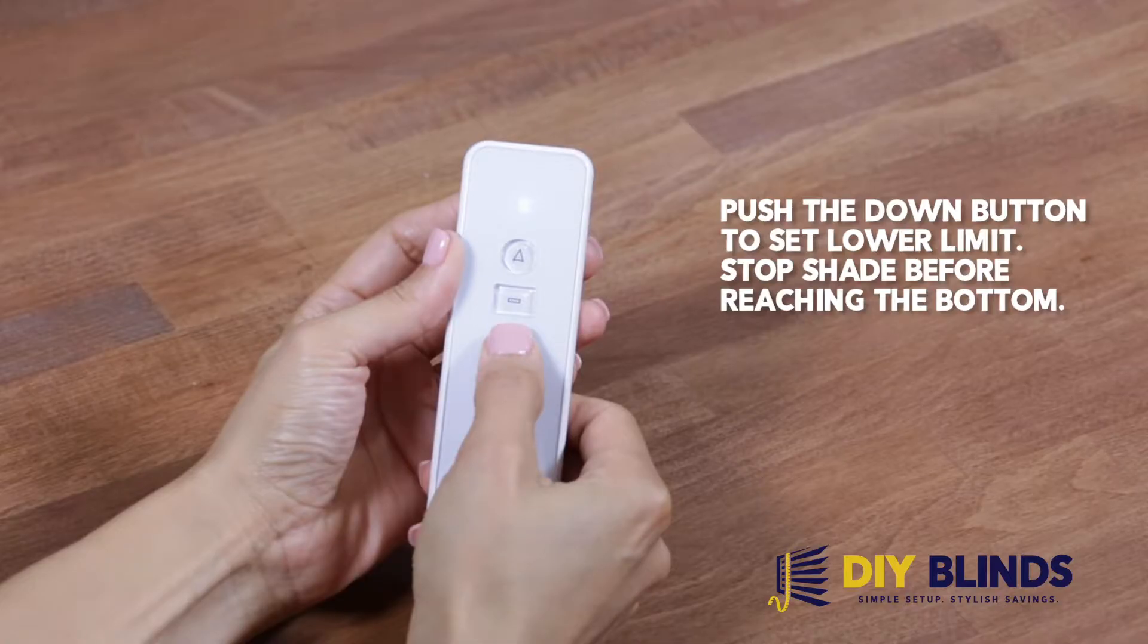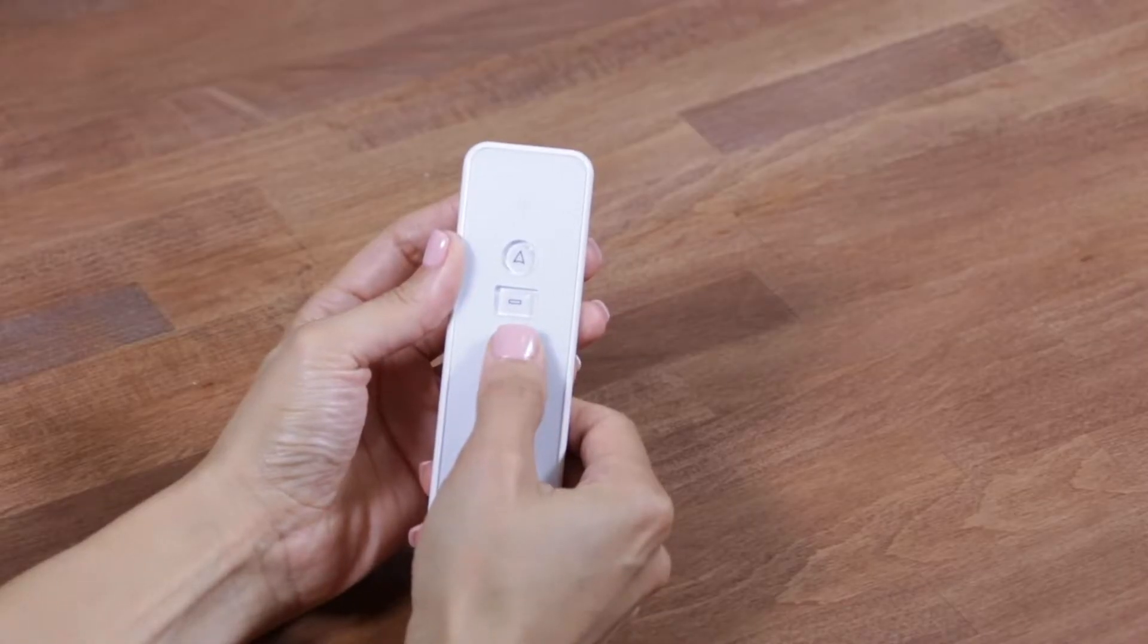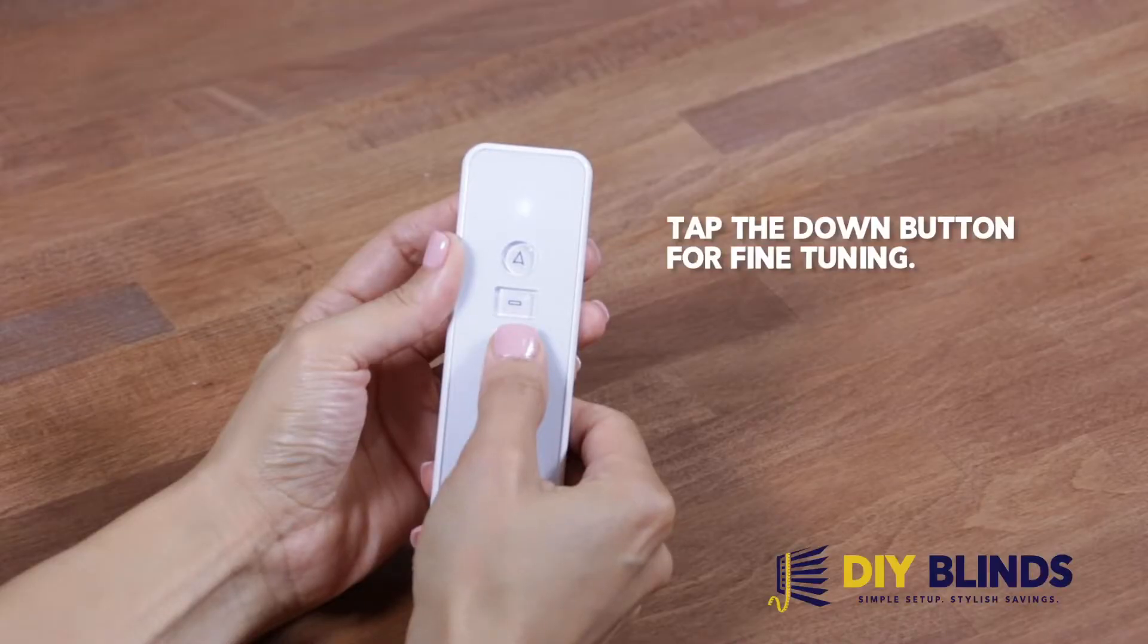Push the down button to set the lower limit. Stop shade before reaching the bottom. Tap the down button for fine tuning.